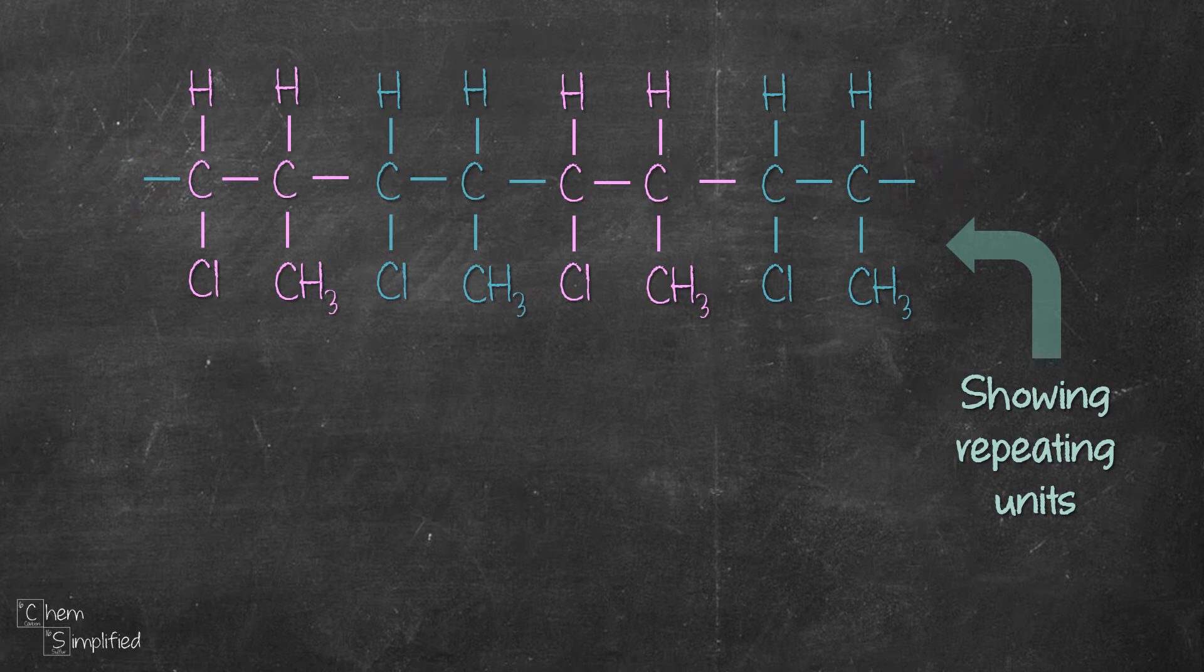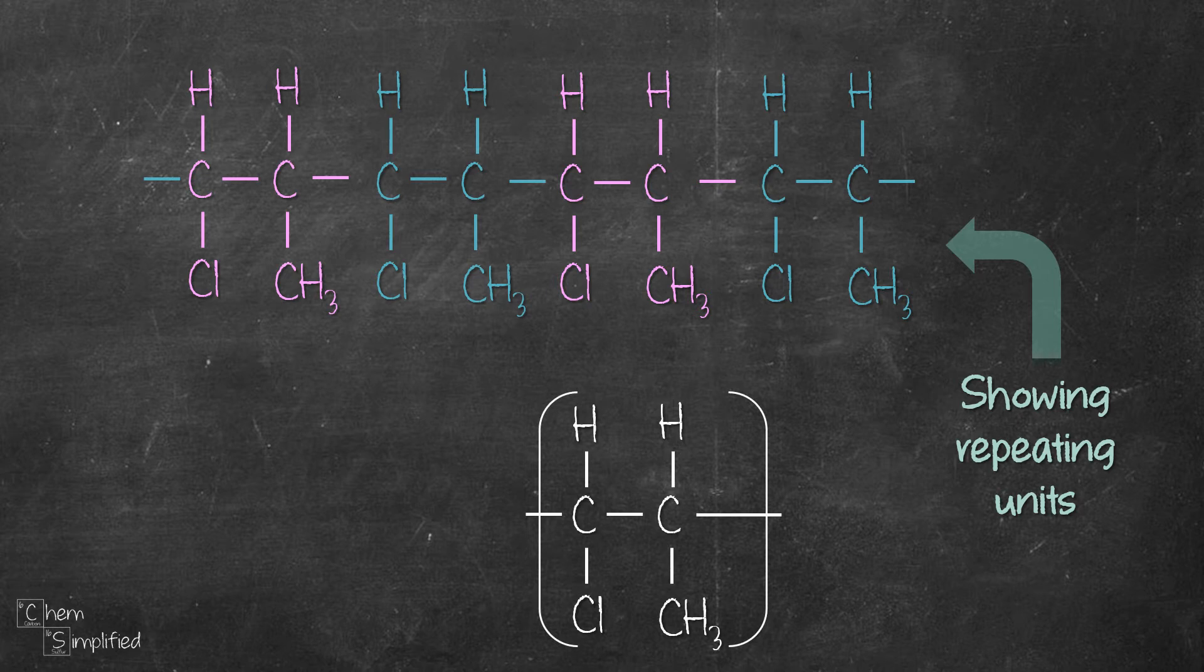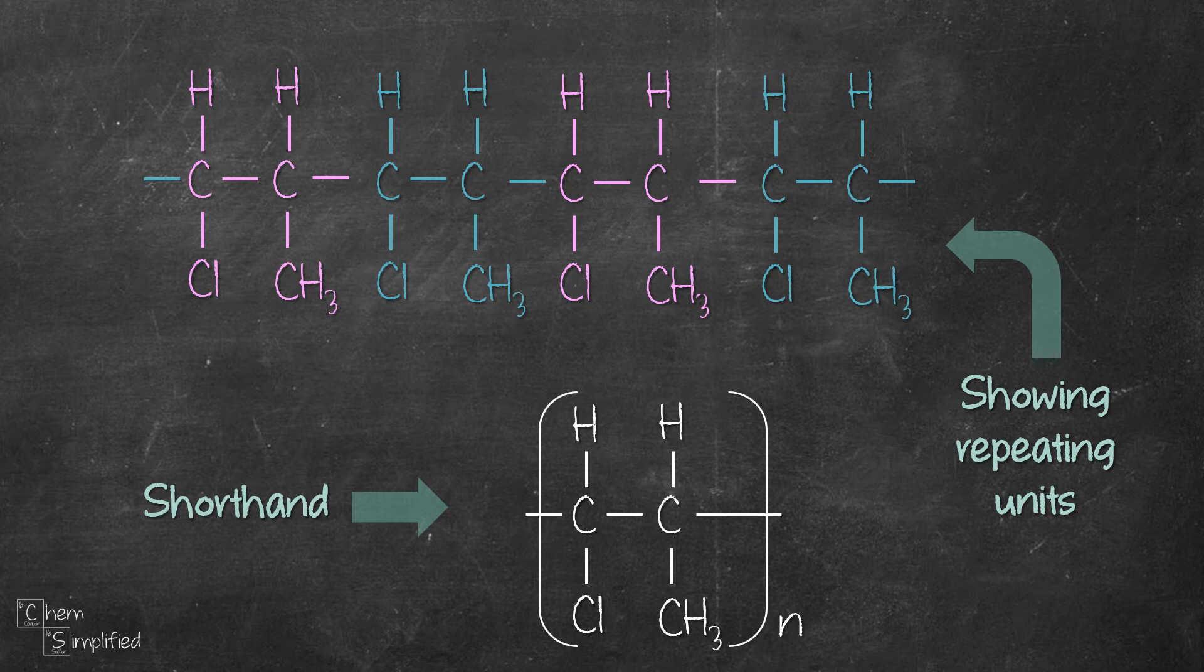Sometimes we just don't want to draw the same thing over and over and in that case we can present the structure of polymer in a shorthand form. Just draw out the repeating unit with the open-ended bonds, place a bracket over it and N at the bottom right. That N is to indicate that we have lots of these linked up together and in this case has value of tens of thousands. We just drew the structure of polymer made from monomer with one C=C double bond.